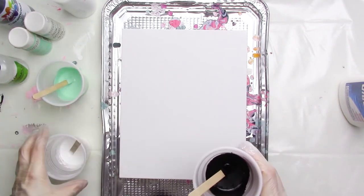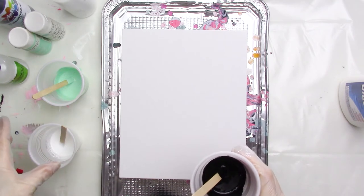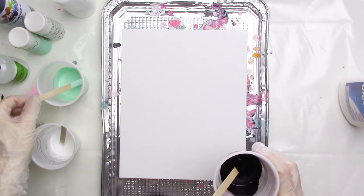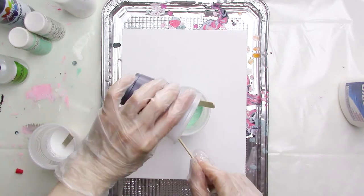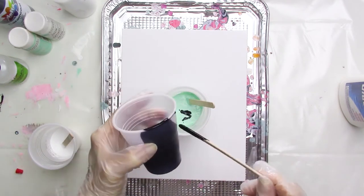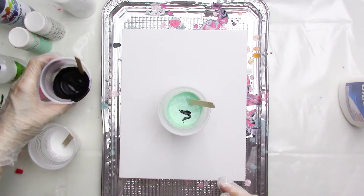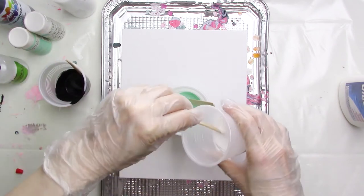When you see something about a dirty pour, this just means that you're pouring all of your paints into one container before pouring it onto the canvas. I'll pour all of the paints into the cup that has the beach glass paint in it, but you can pour them into any color or even pour them all into an empty cup.